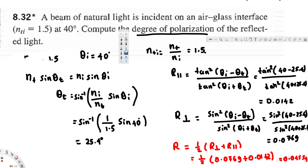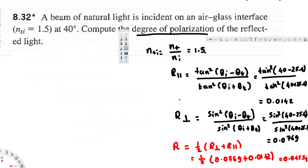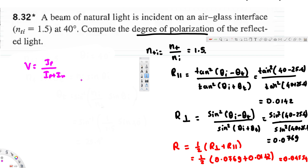Now we have R_perpendicular, R_parallel, and R_average. To find the degree of polarization, we use the equation V equals i_p divided by (i_p plus i_n), where i_p represents the constituent flux density of polarized light, and i_n represents unpolarized light. Let's go ahead and find i_p — i_p is given by R_perpendicular minus R_parallel.